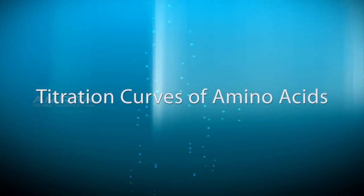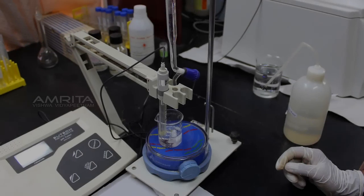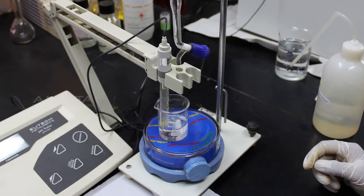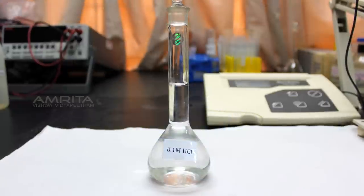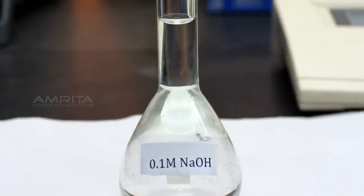Titration Curves of Amino Acids. Titration is a method used to quantitatively determine the unknown concentration of an acid or base by neutralizing the acid